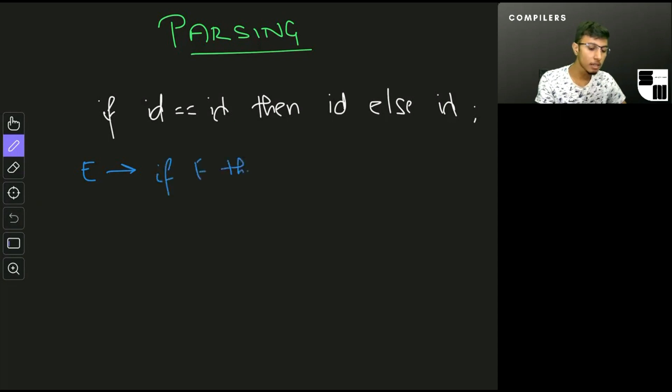At this stage we now have three non-terminals in our string: this E right here, this E right here, and this E right here. So what the leftmost derivation says is that we would replace this E first, so from here we would go to something like if E equals equals E then E else E.